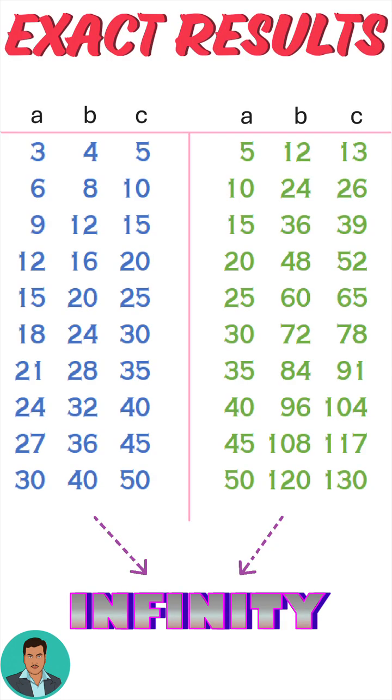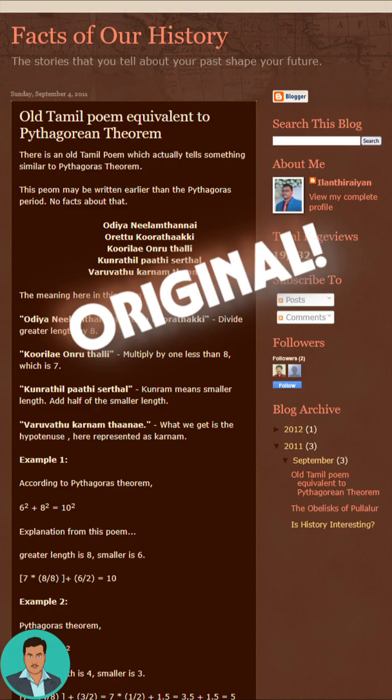This formula gives exact results for the multiples of the Pythagorean triples 3, 4, 5 and 5, 12, 13 — up to infinity. This brilliant, unique approach is my original finding.